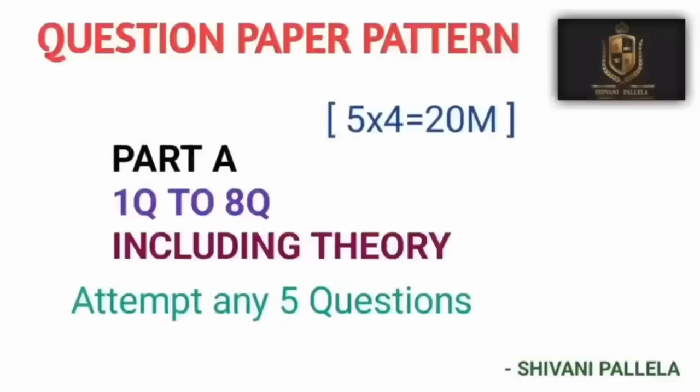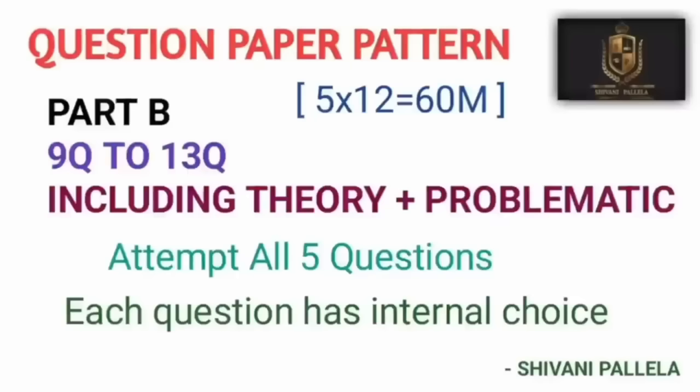In Part A, questions one to eight are given and you need to attempt five. It includes both theory as well as problematic questions. Business Statistics is a combined subject — both theory and problems. For four-mark theory answers, you need to write about one and a half sides of paper.